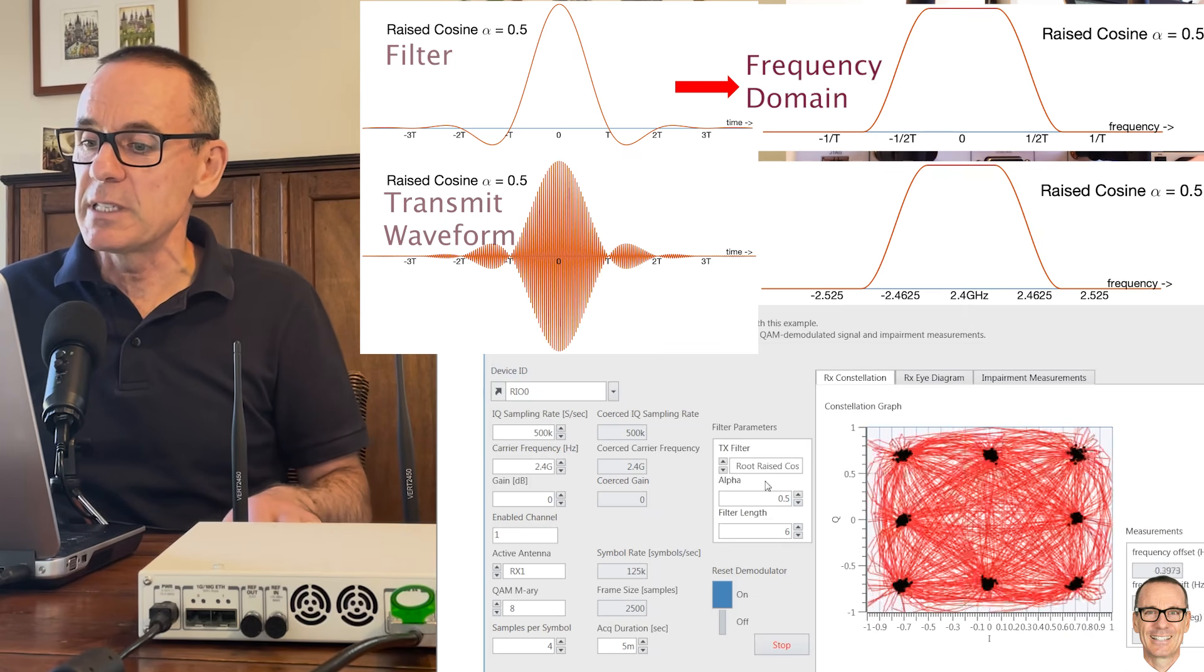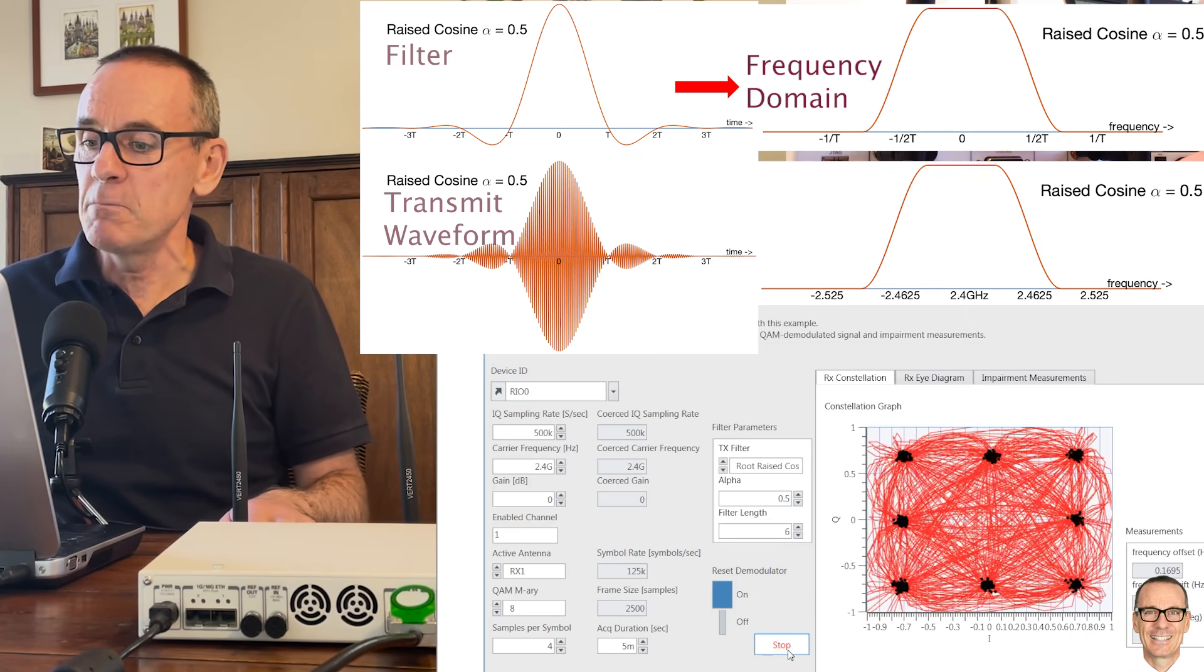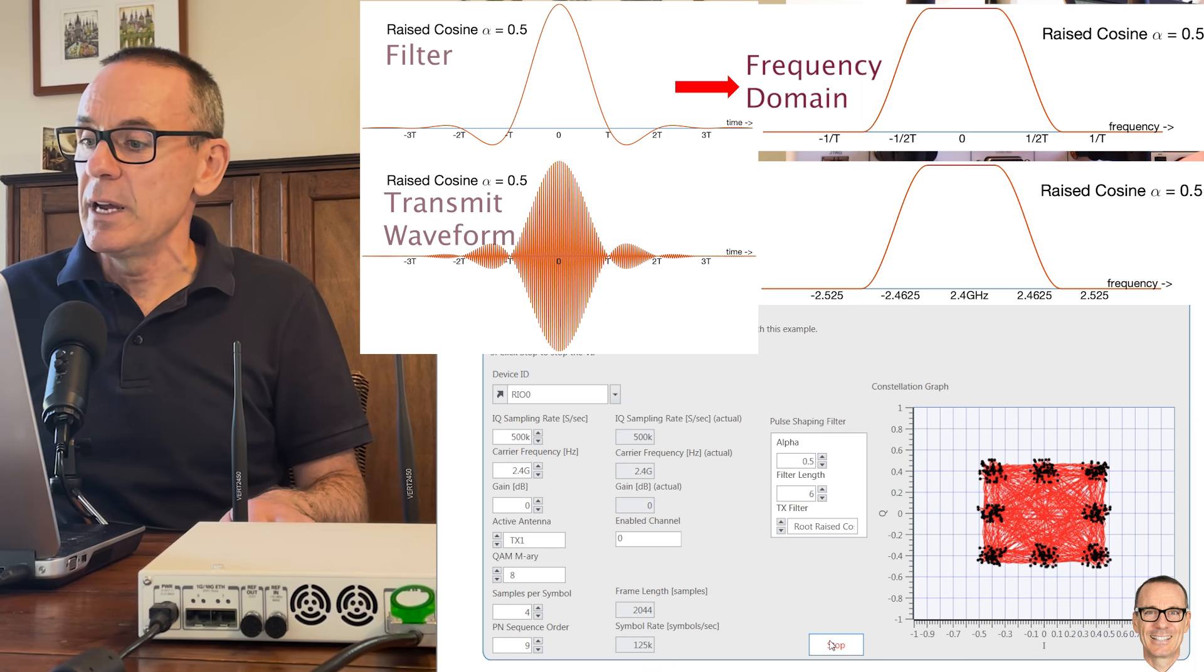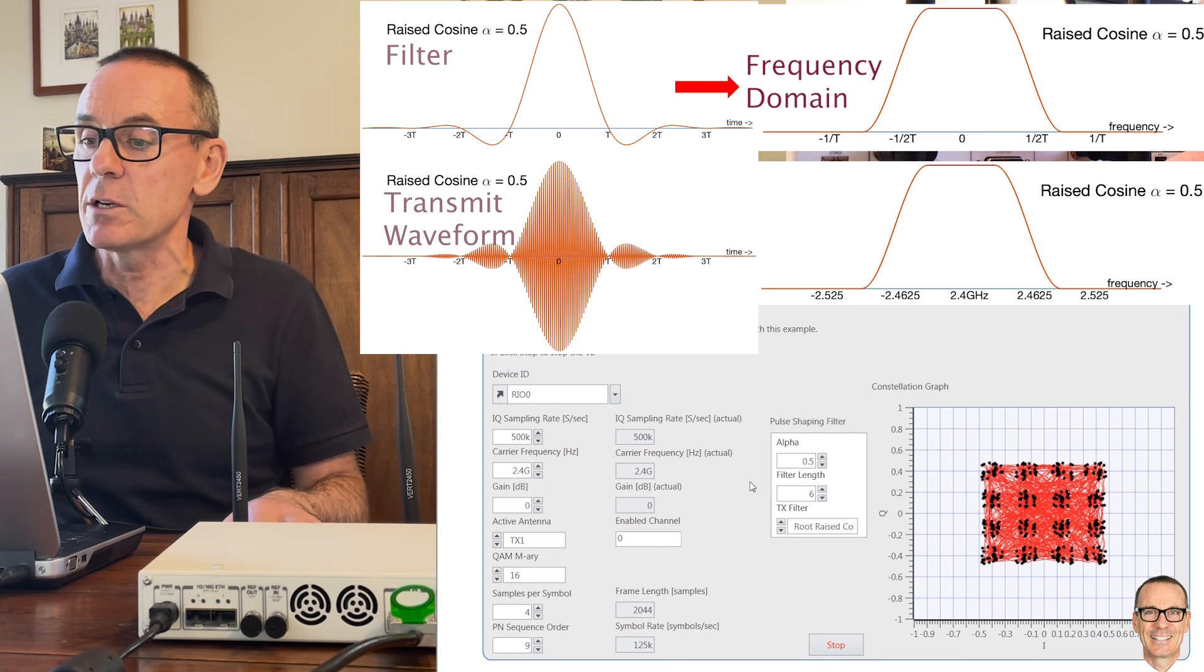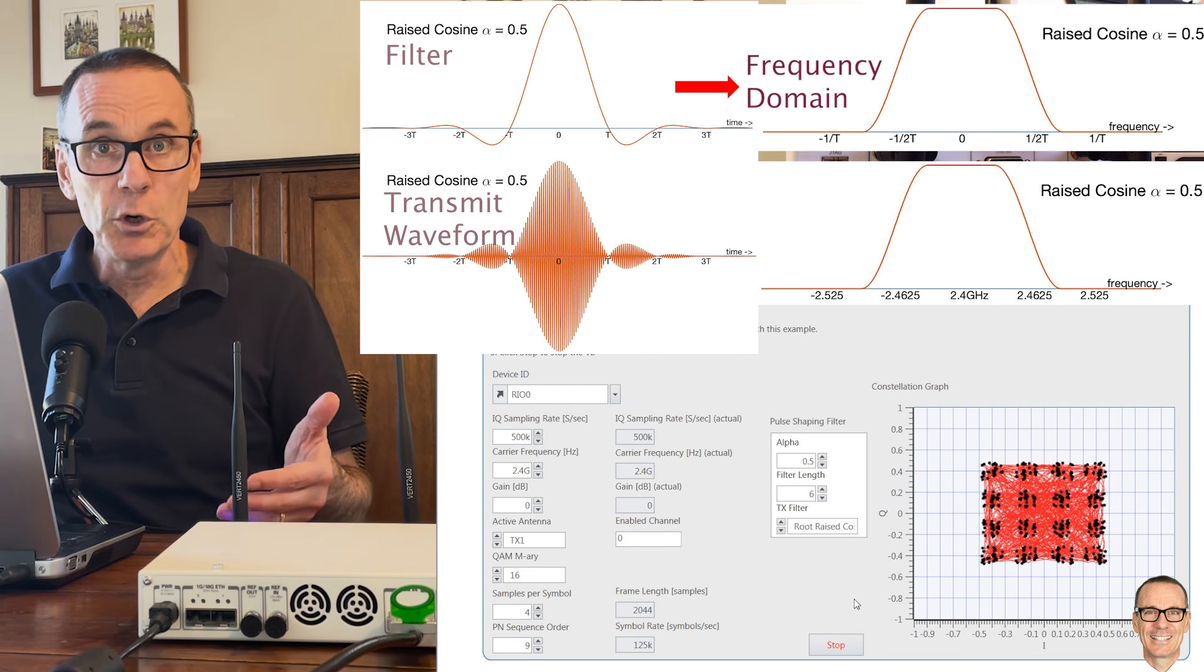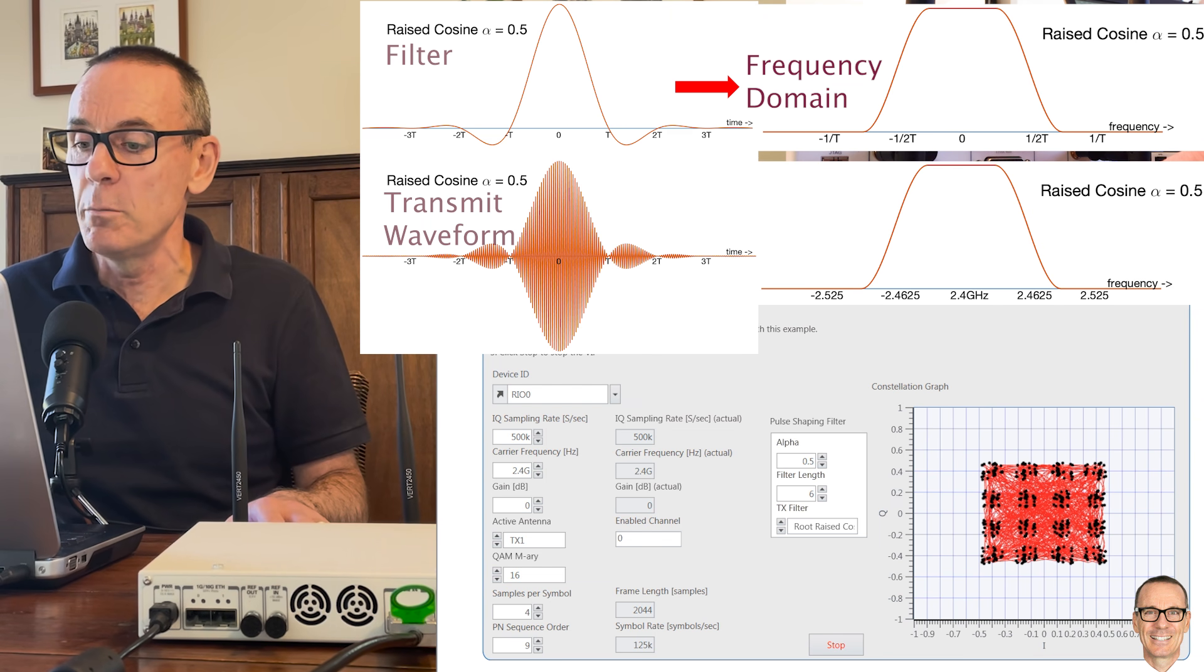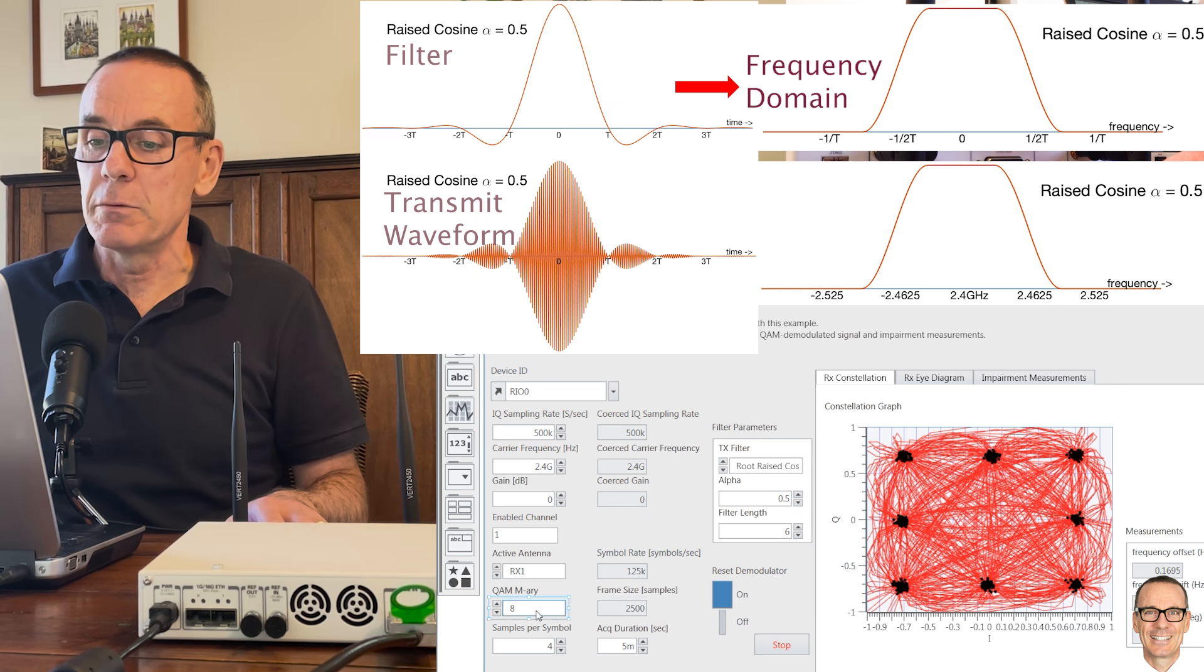So this is what we can see for 8QAM. Let's just see what it is going to be like for 16QAM. And here's the constellation, the transmit constellation with 16QAM. More challenging because we're now sending four bits per symbol. And so let's look at the receiver with 16QAM.